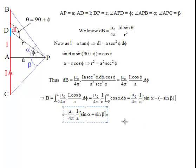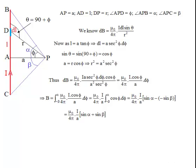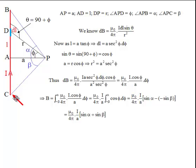As a special case, when the wire is infinitely long, C goes further downward and β tends to π/2. Similarly, if we go much ahead of B in the upward direction, α tends to 90 degrees. For an infinitely long conductor, both α and β equal 90 degrees.